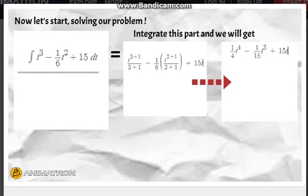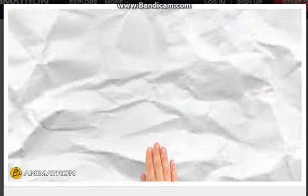And solving it, we will get 1/4 T⁴ - 1/18 T³ + 15T by following the rules of integration. After that, substitute all T which is time for 5.